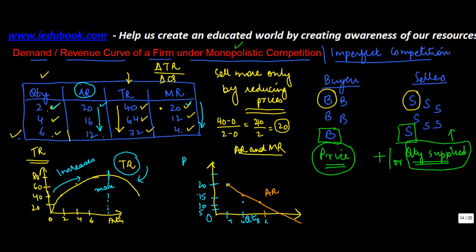Now let's draw the marginal revenue curve. When quantity is 4, marginal revenue is 12, so it should be somewhere around here. At 6, it is 4. So if you draw the marginal revenue curve, it comes like this. What we notice is that the marginal revenue curve lies to the left of average revenue in an imperfect competition.